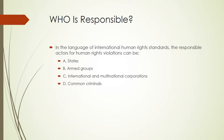Who is responsible for human rights violations — in this case, violations of religious freedom? In the language of international human rights standards, the responsible actors could be categorized as states, armed groups, international and multinational corporations, and common criminals. Note that the state has the duty to protect, but the state can also be directly responsible for a violation of religious freedom. There are also other possibilities where other groups can be responsible for violations of religious freedom.